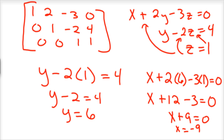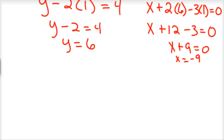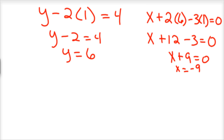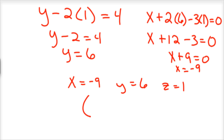And there are my three solutions: x equals negative 9, y equals 6, and z equals 1. Or the ordered triple in a three-dimensional system: negative 9, 6, and 1. That's where those three planes intersect. I hope this helped you, and I will see you next time.